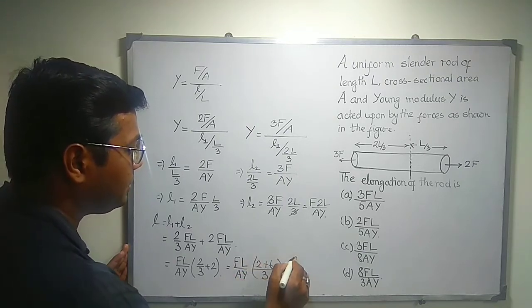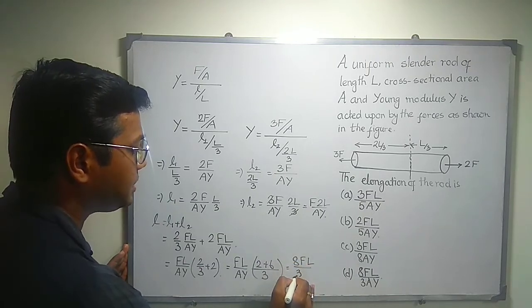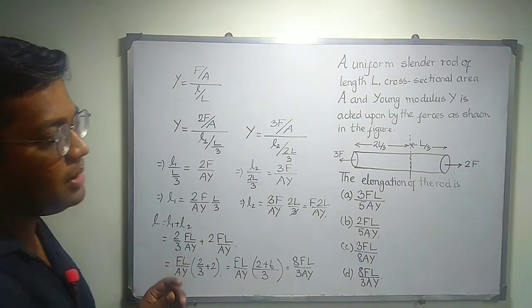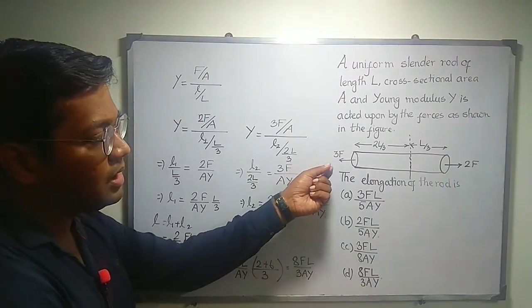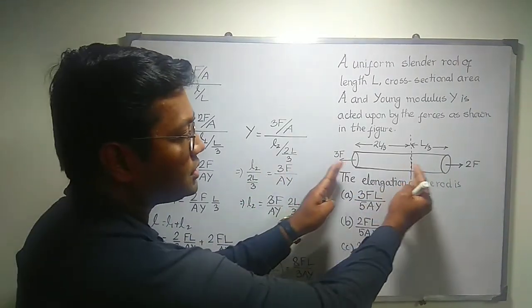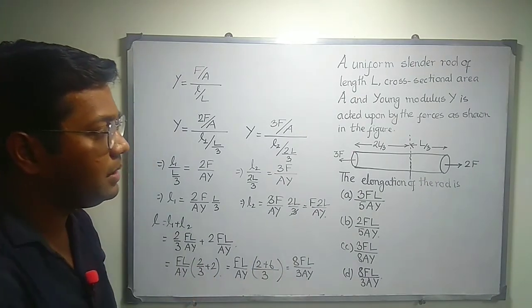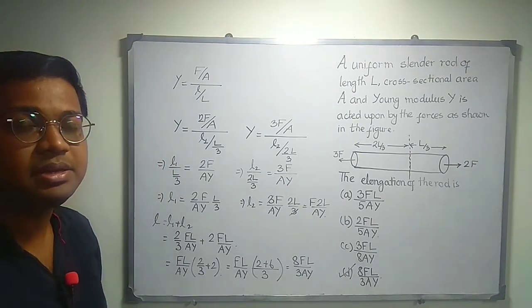So it becomes 8 capital F into L divided by 3 into AY. The total elongation by applying a force from left to right, by applying a force from right to left. The total elongation if I calculate, then it will be 8FL divided by 3AY. So option D is here as the correct answer.